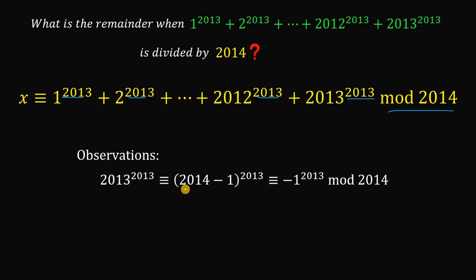Now 2014 mod 2014 — since this is a multiple of 2014, it is just 0 mod 2014. What's left is negative 1 raised to 2013. Since 2013 is an odd number, when a negative number is raised to an odd power the result is negative, so the result is (−1)^2013 mod 2014.